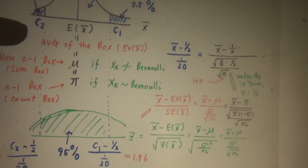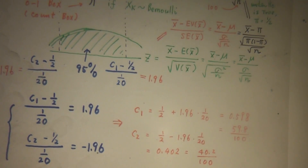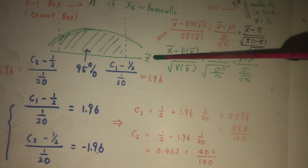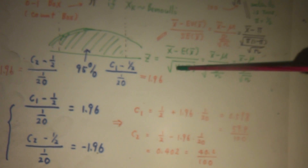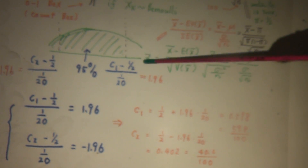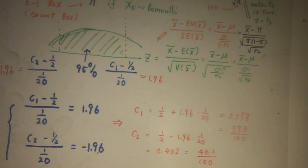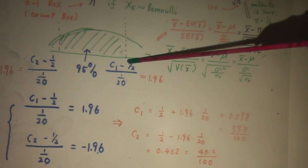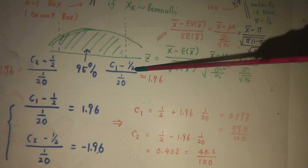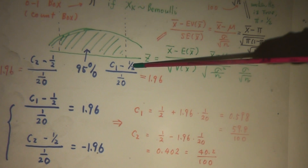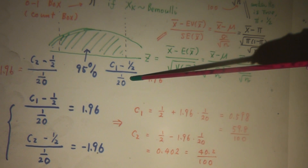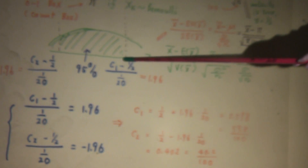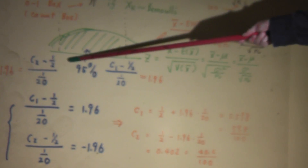Let's take a close look at the z-curve. This z-curve is obtained after we standardize X̄: X̄ minus the mean of X̄ divided by the standard deviation of X̄ — or E(X̄) divided by SE(X̄). This is the z-score. From here to here covers 95%. And if we standardize from the picture above, this is C1 minus one-half divided by 1 over 20. E(X̄) is one-half and SE(X̄) is 1 over 20. You check the standard normal table and find from here to here covers 95%, giving the value 1.96, and the other side is minus 1.96.